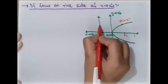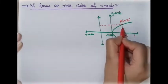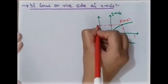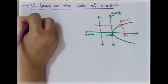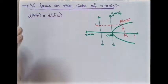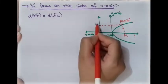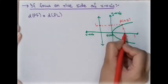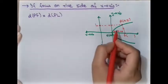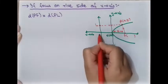We know that the distance PF equals the distance PL, where L is the foot of the perpendicular from P to the directrix. We suppose the distance from the vertex to the focus is A. We already know that this distance equals the distance from the vertex to the directrix.